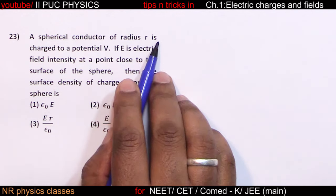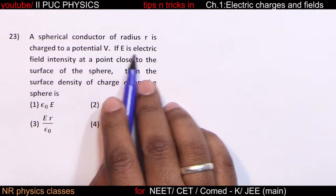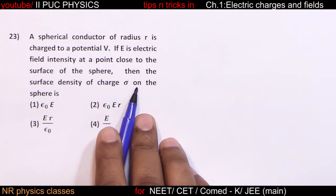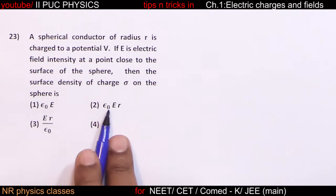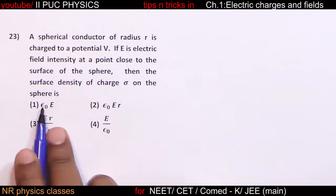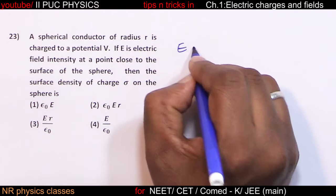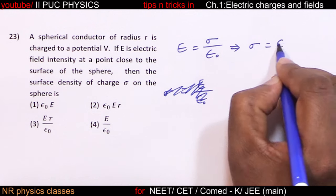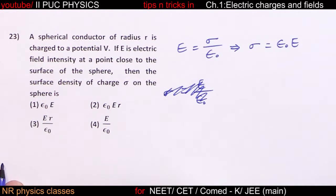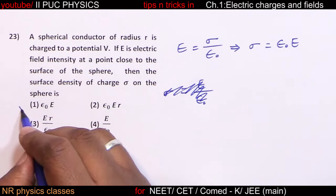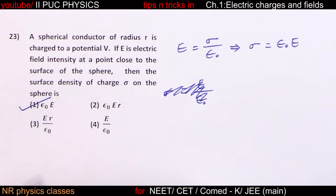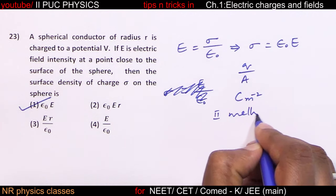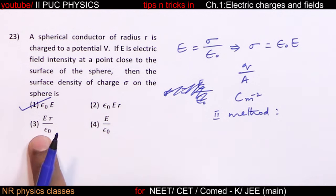A spherical conductor of radius R is charged to potential V. Electric field E at a point close to the surface: E = sigma/epsilon naught, so sigma = epsilon naught × E. For two spherical conductors of radii 3 cm and 5 cm charged to 30 V and 50 V: sigma is proportional to V/R. Ratio sigma1/sigma2 = (30/3)/(50/5) = 10/10 = 1:1.